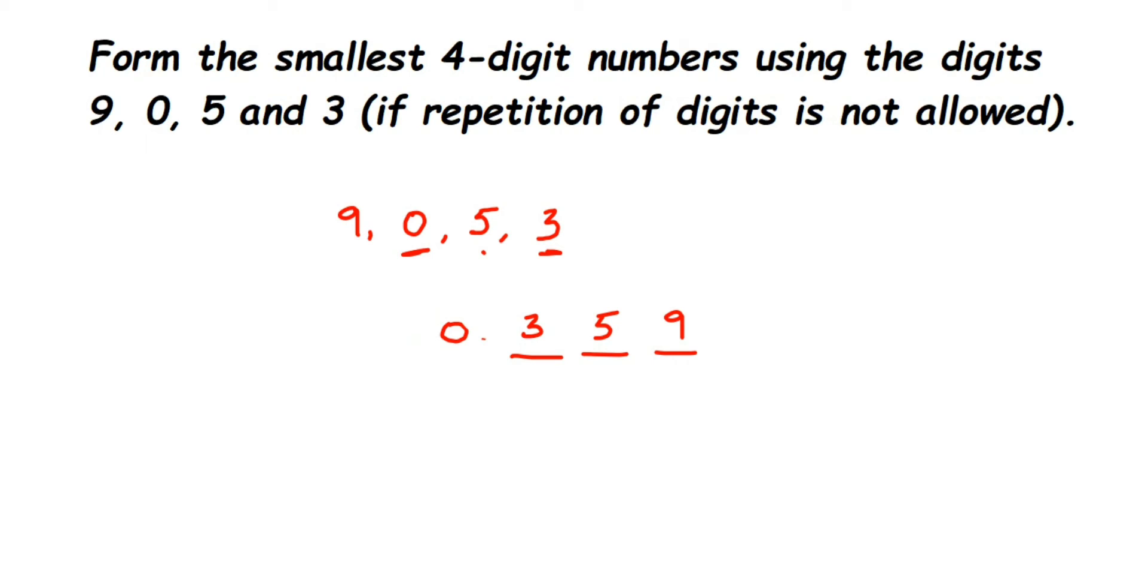The zero and 3—instead of writing zero in the beginning, I'm going to start with 3, that is the second smallest, and then I'm going to write down the zero. So that's it. The smallest four-digit number here will be 3059.